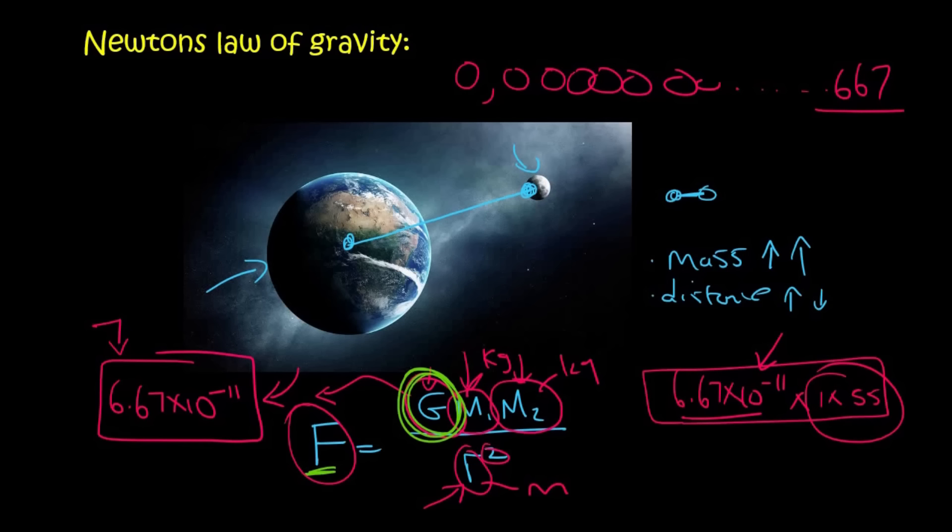But what you need to take away from this lesson is that all objects, no matter how big they are, do attract each other. And to work out the force of attraction, we use this formula over here, where G is a constant, m1 and m2 is the mass in kilograms, and r is the distance between their centers in meters. Thank you for watching.